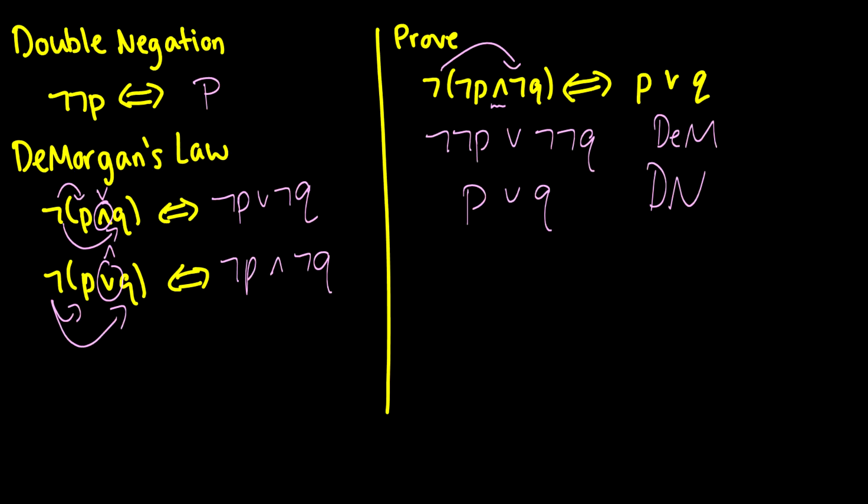If you were being rigorous, you would probably do one step at a time, but double negations are very easy to track and take care of, so doing them all in one line, probably not a big deal.